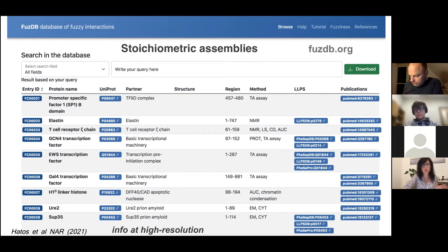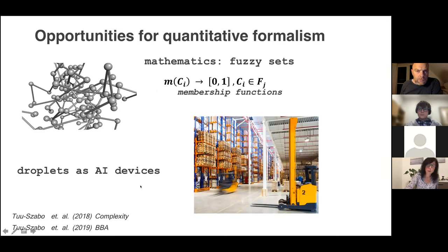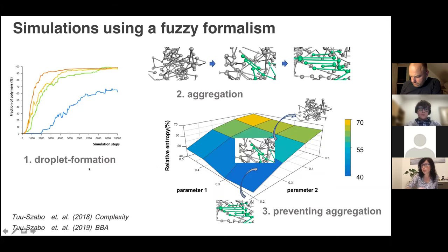The context dependence of these interactions can be described mathematically by fuzzy sets, simply describing the variation in interactions. For fun, with mathematician colleagues, we proposed that droplets act like AI devices. We took the control algorithm of a warehouse machine that sorts goods and computes optimal packing, and used it for simulation of droplets. We could simulate droplet formation and its dependence on sequence, and also simulate aggregation—these are from our simulations.